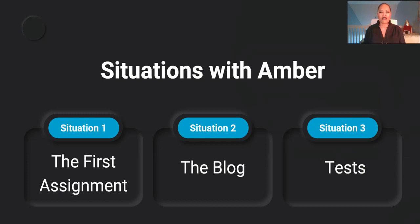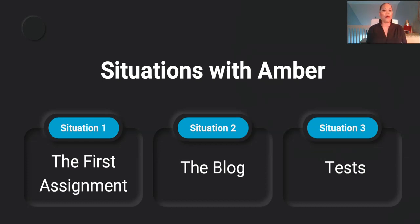I also noticed that a component of the assignment was missing, and she had not implemented APA style. So I sent her an email commending her on submitting early and staying ahead of the syllabus, then shared the things she needed to fix. I asked if she had watched the instructional video and gone over the rubric, since that would help her ensure all the required components were there. Her excuse was: 'I don't have time to watch the videos or print the rubric and examine my paper.' I told her she could certainly resubmit the assignment as long as she did so by the due date.